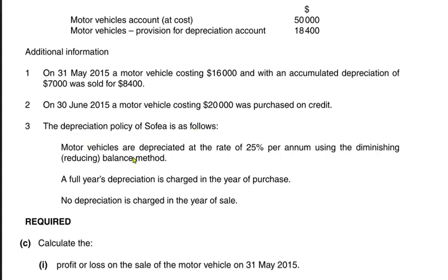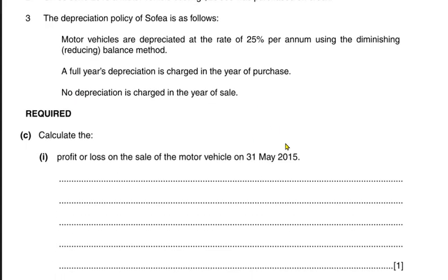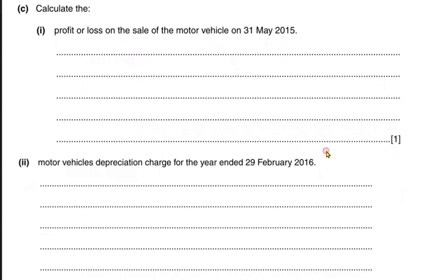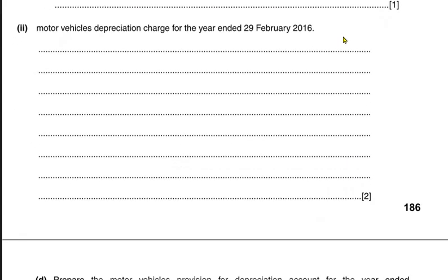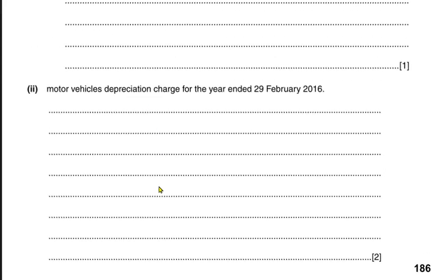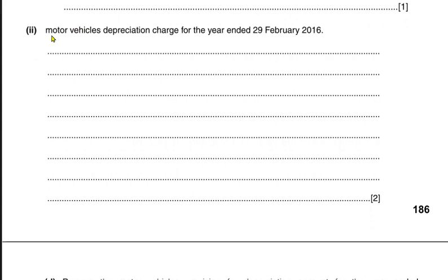The depreciation policy for Sofia is 25% reducing balance (diminishing balance) method with a full-year policy — full-year depreciation is charged in the year of purchase, and no depreciation in the year of sale. First, we need to calculate depreciation before we can make the provision for depreciation account.